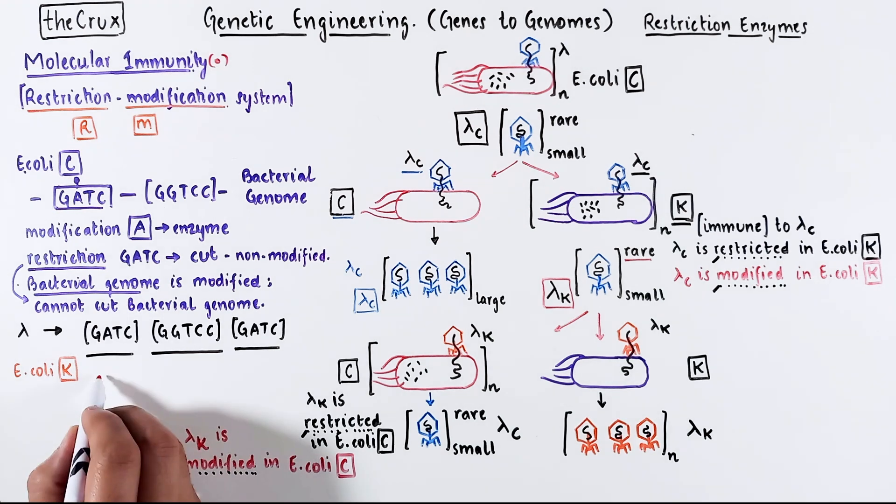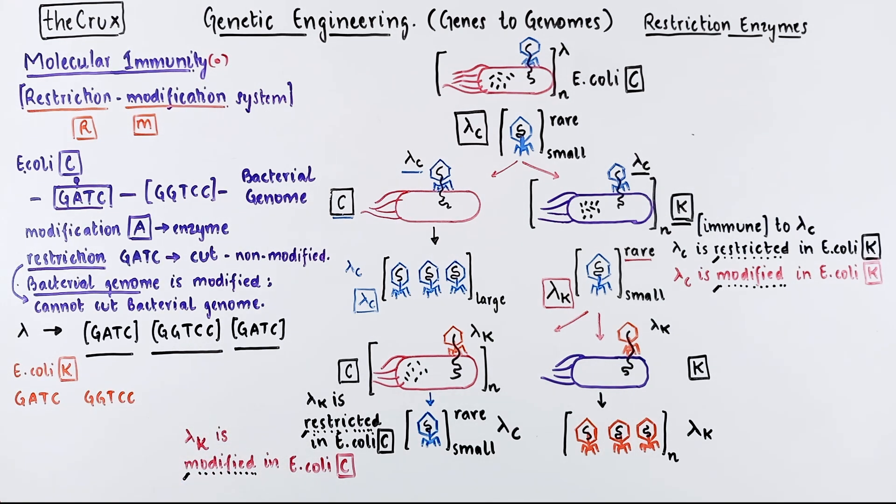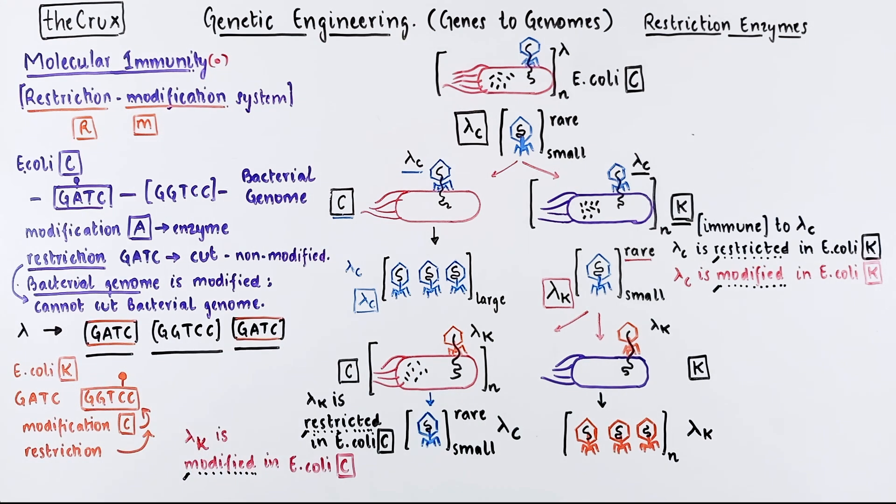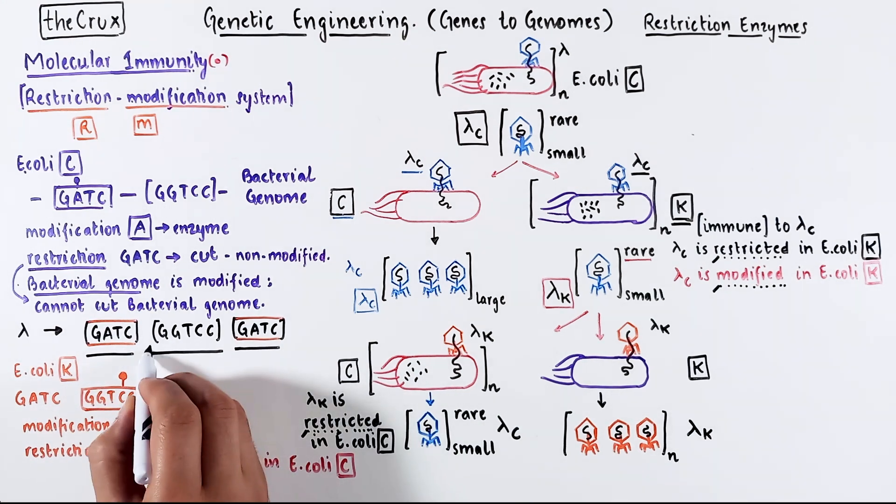Given these two sets of sequences, the E. coli K carries a modification on the cytosine of GGTCC. Same logic here, that there is an enzyme that recognizes this specific set of sequences. And there is a restriction enzyme that recognizes GGTCC and cuts it only when the GGTCC is non-modified. So E. coli K instead of GATC cares only about GGTCC.